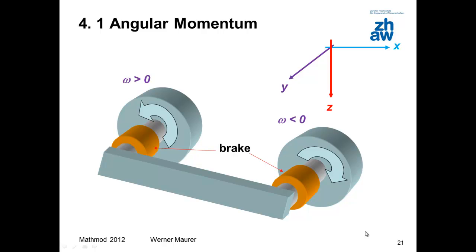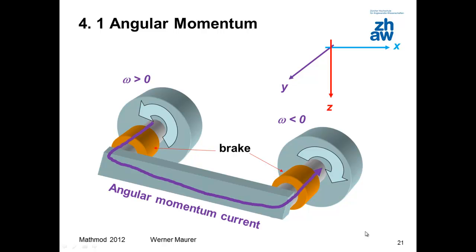Now let's move on to rotational mechanics. Two flywheels rotating in opposite directions are braked. Angular momentum flows from one wheel into the other. At the same time, energy flow passes from each of the two wheels into their brakes. The strength of the energy flow equals angular momentum flow times angular velocity. If the angular velocity is less than zero, the energy flows against the angular momentum.